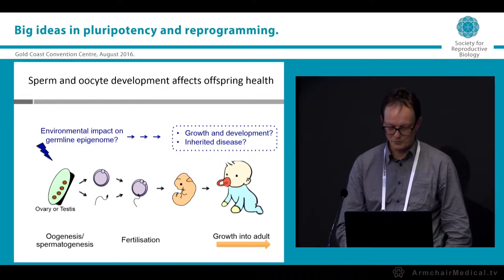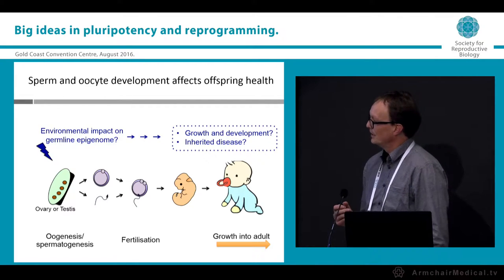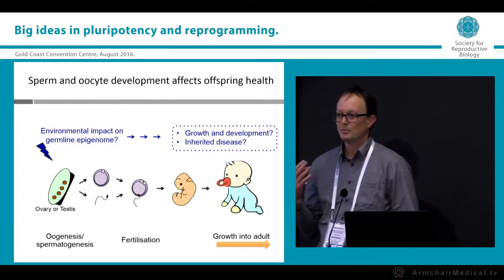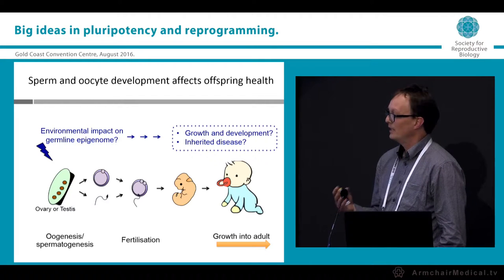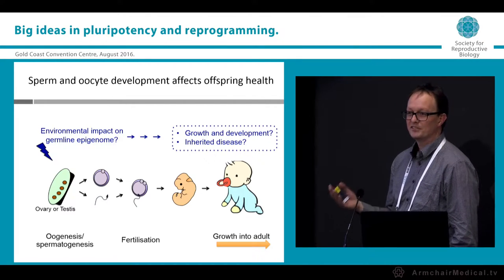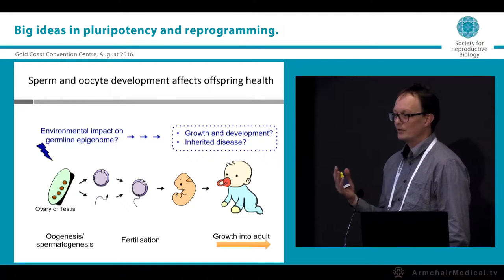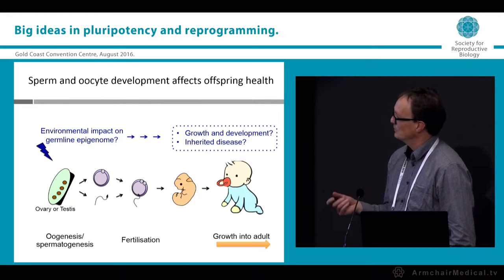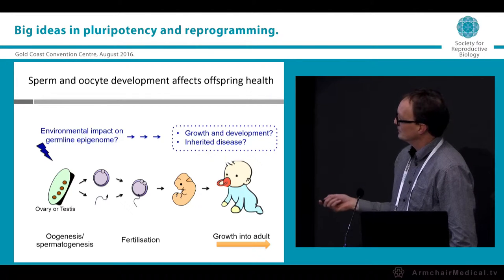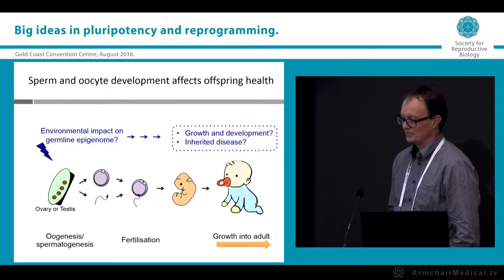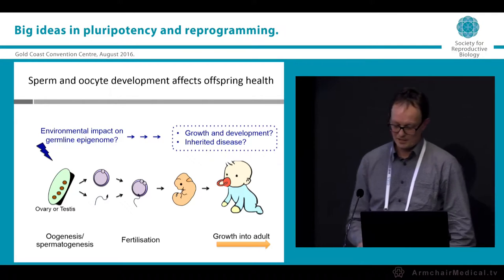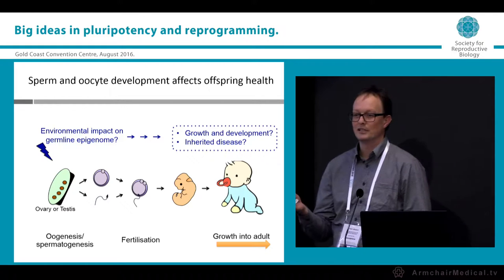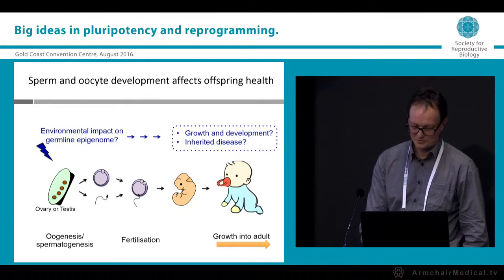This is particularly important to understand because epigenetic mechanisms are responsive to environmental cues, and particular environmental stimuli can change epigenetic state in cells. Whether these environmental stimuli can change outcomes in the germline, leading to differences in the offspring, is essentially what this talk is about — a topic important for understanding both evolution and disease in humans.